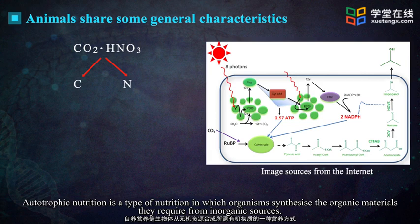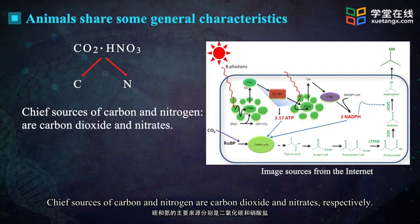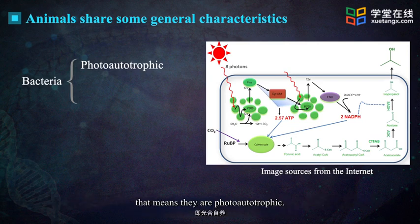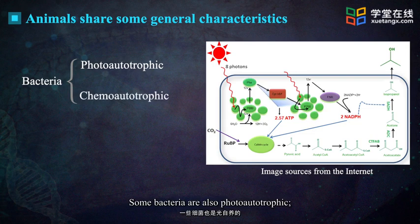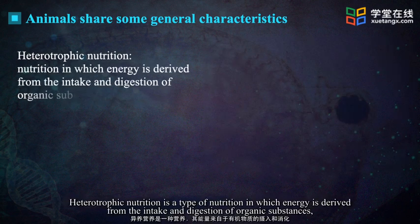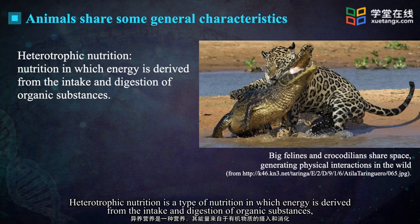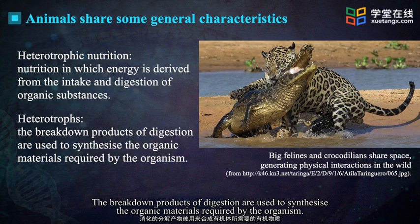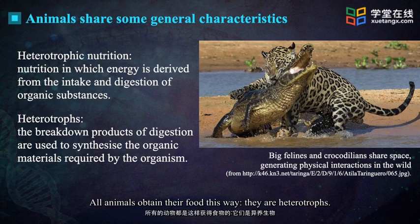Autotrophic nutrition is a type of nutrition in which organisms synthesize the organic materials they require from inorganic sources. Chief sources of carbon and nitrogen are carbon dioxide and nitrates, respectively. All green plants are autotrophic and use light as a source of energy for synthesis — they are photoautotrophic. Some bacteria are also photoautotrophic, while others are chemoautotrophic, using energy derived from chemical processes. Heterotrophic nutrition is a type in which energy is derived from the intake and digestion of organic substances. All animals obtain their food this way; they are heterotrophs.